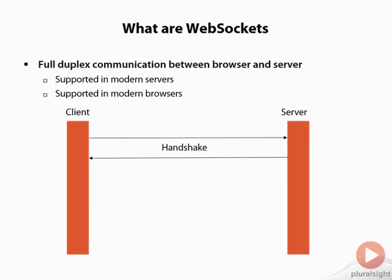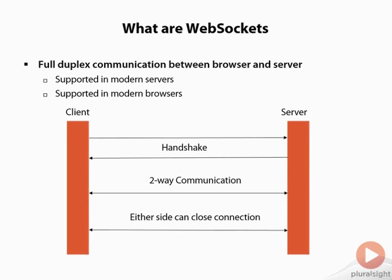Once the handshake has been performed and both sides are happy that they can communicate with WebSockets, we can then send data two ways — the client can send data to the server and the server can send data to the client. At some point, one side or the other can decide they want to end the communication. One side closes the connection and the other side receives an event telling them the connection's been closed, so they can tidy up behind themselves.